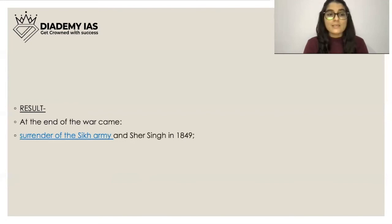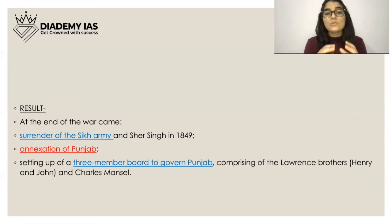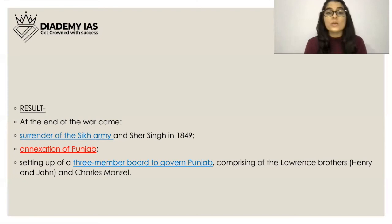At the end of the Second Anglo-Sikh War, Shere Singh and the Sikh army surrendered in 1849. Punjab was annexed, and a three-member board was set up to govern Punjab. The three members were two Lawrence brothers — Henry Lawrence and John Lawrence — and Charles Mansell. This question about the board members comes up frequently in exams.